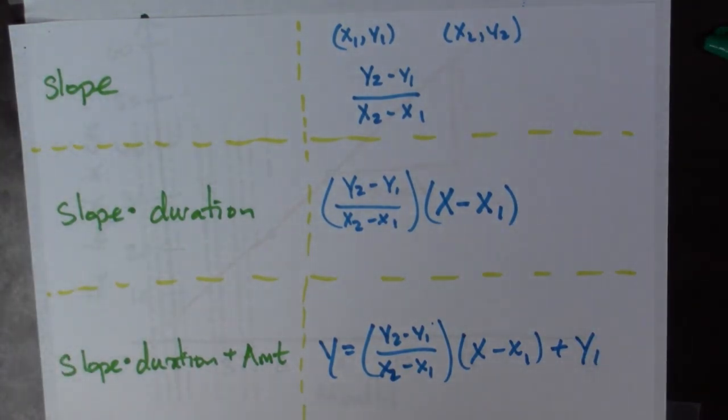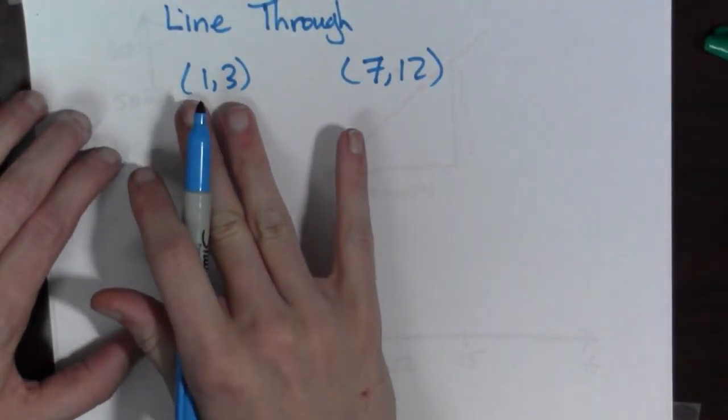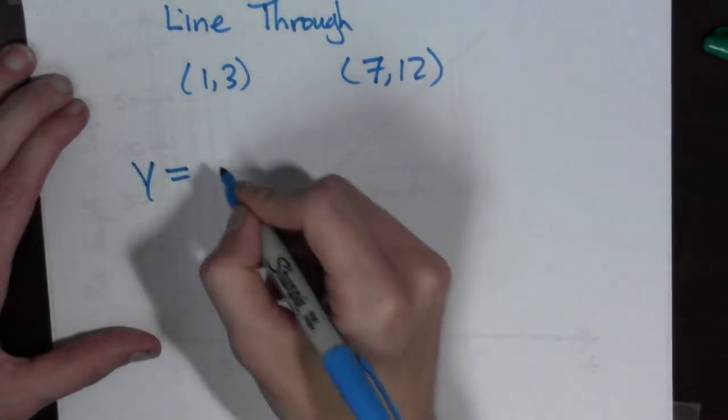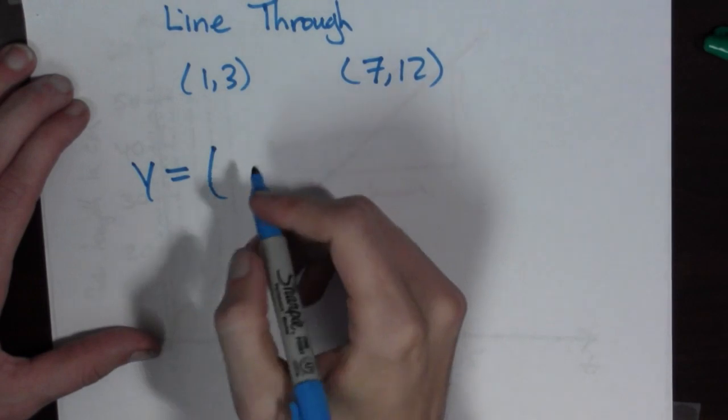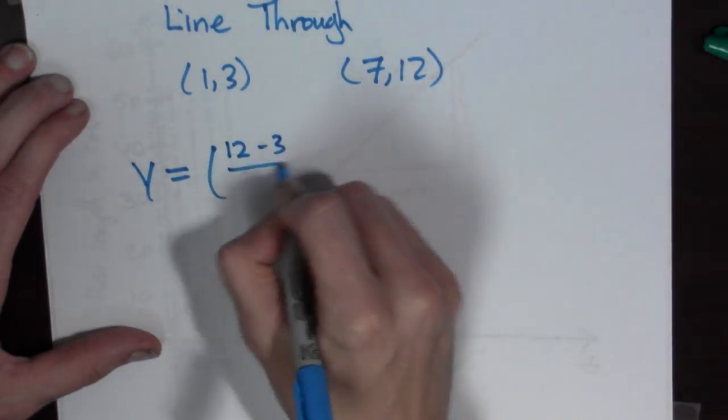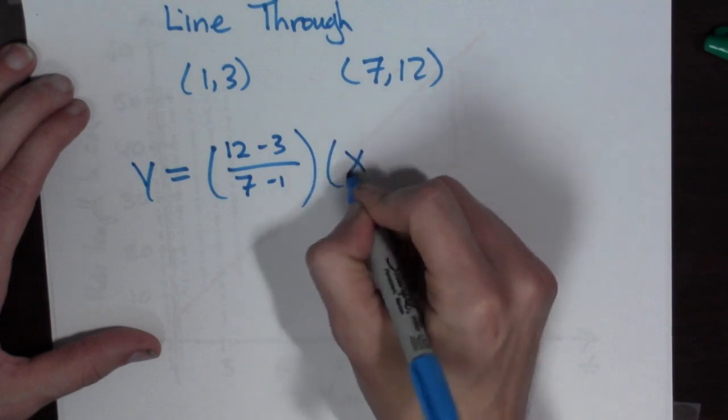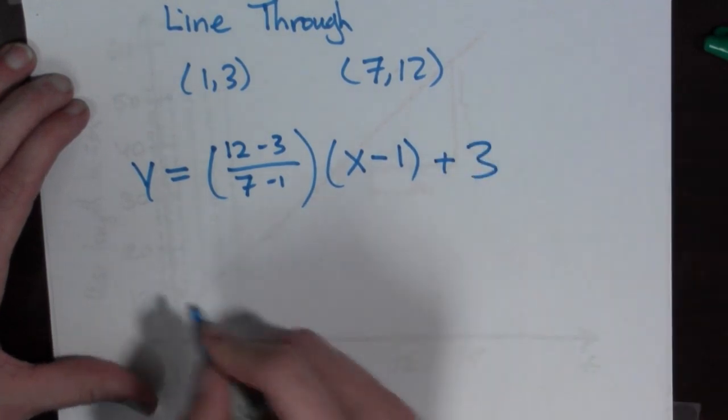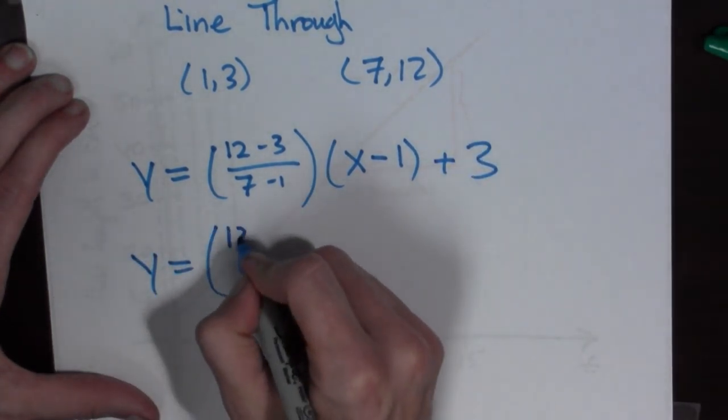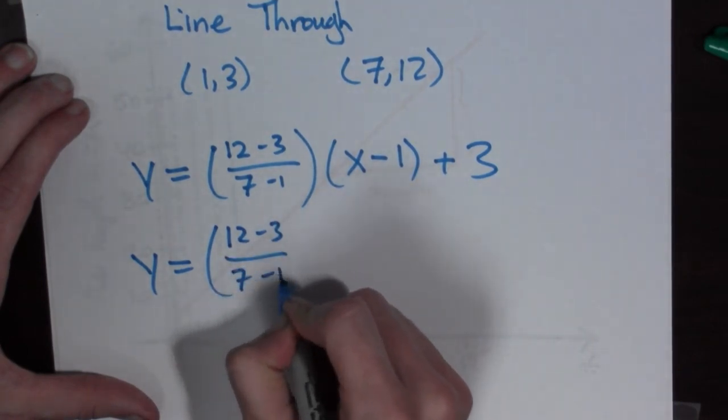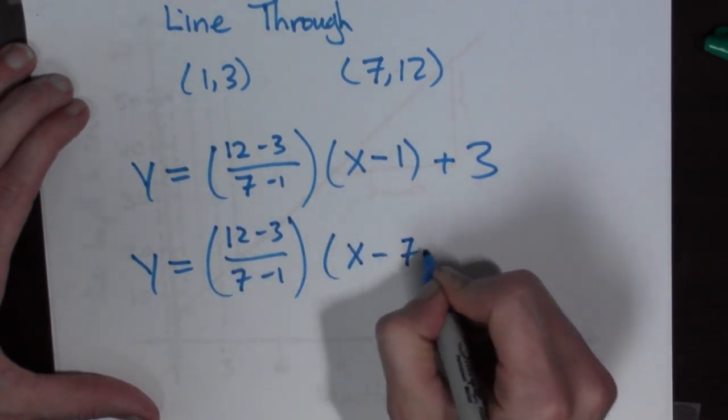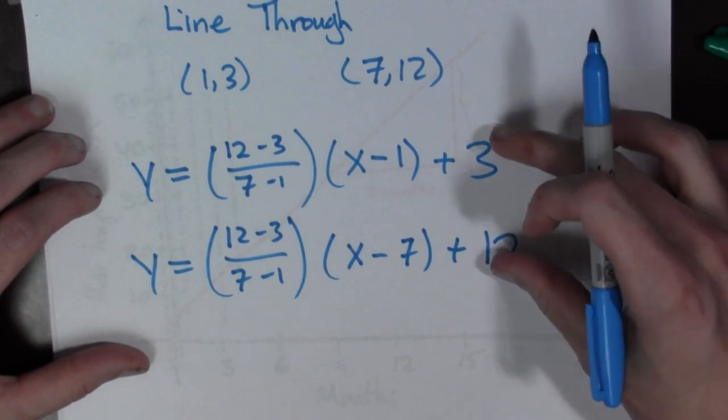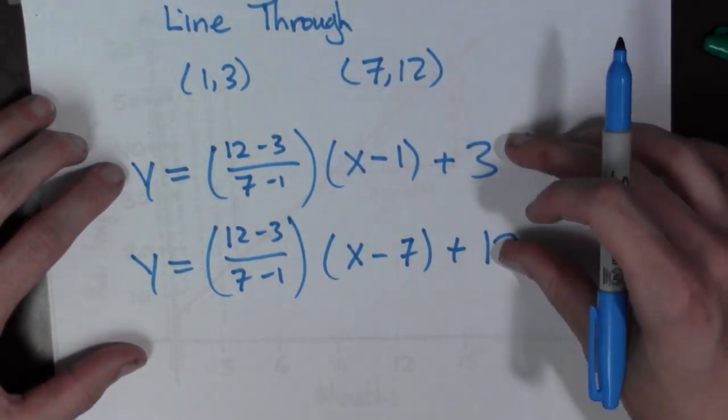Let's see a real example of this. Now suppose you want the line that goes through the points one, three, and seven, twelve. We should just be able to write it down. So it's going to be y equals, we have to write down the slope. So it's going to be twelve minus three all over seven minus one times x minus, now it doesn't matter if I choose one or seven, I'll actually do both, x minus one plus three. But another perfectly good answer, the same answer in fact, just looks a little different, is when you have the same slope and you do x minus seven plus twelve. I leave it to you to verify that these two equations both plot the same line.